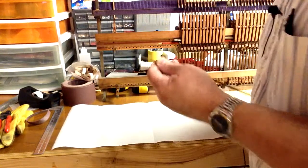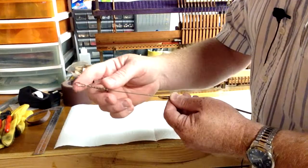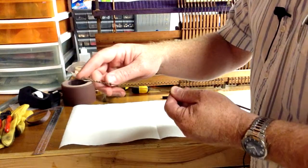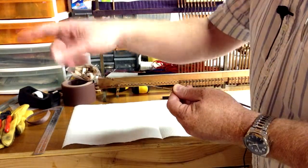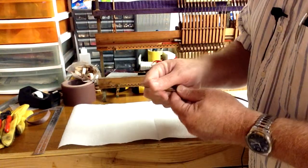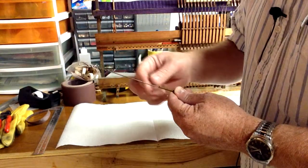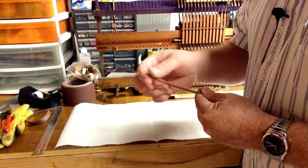Now the first measurement that you want to take is the distance from the hitch pin loop, which is the end that goes on the hitch pin at the farthest end away from the tuning pin. So from that loop to the start of the winding.